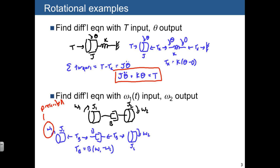what we end up with is the sum of torques acting on J2 is equal to just Tb is equal to J2 times omega 2 dot.